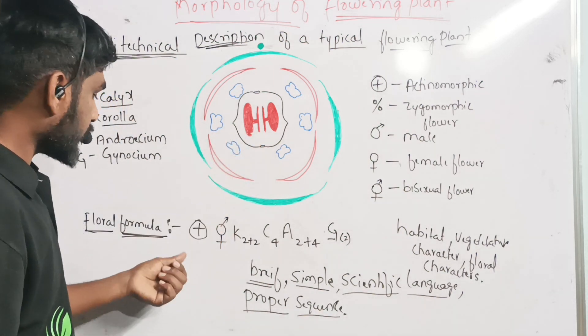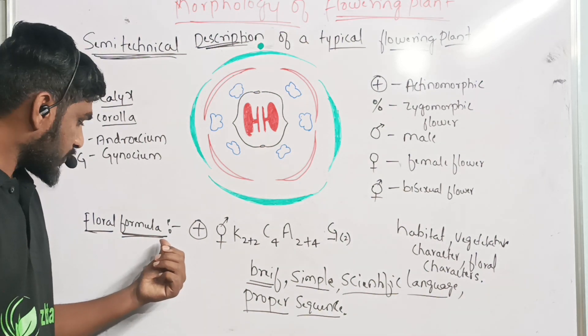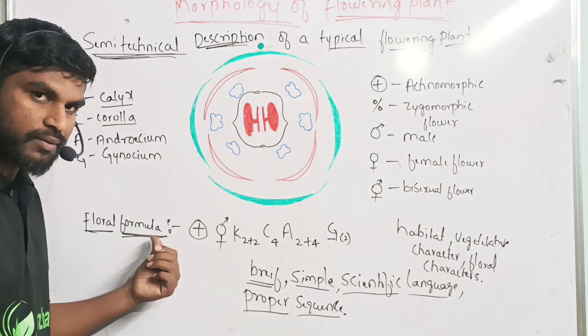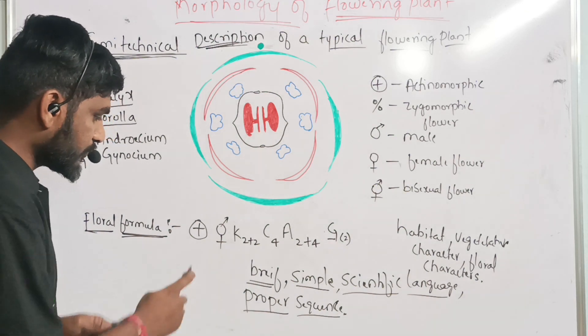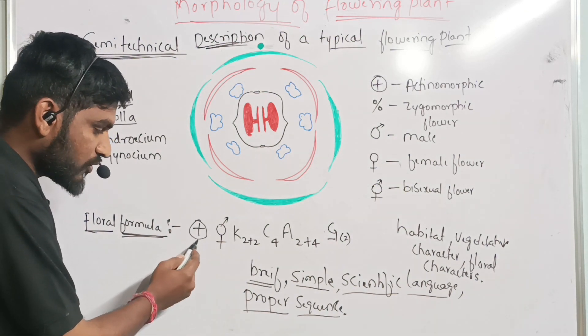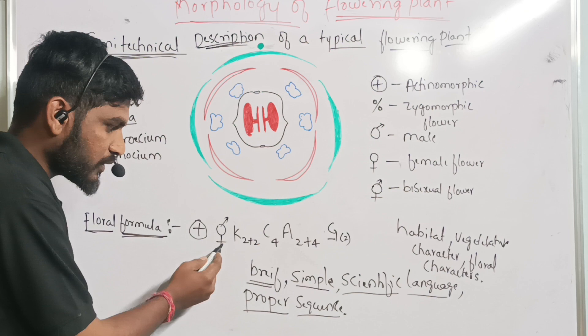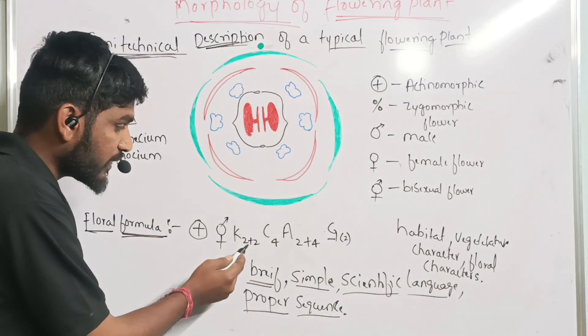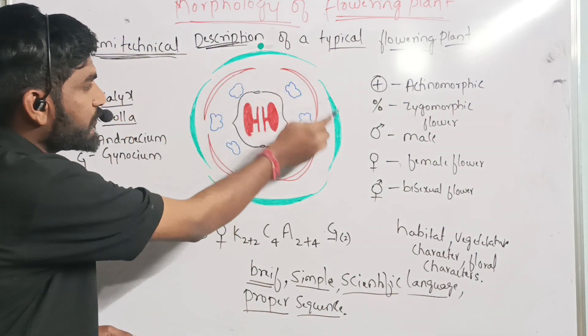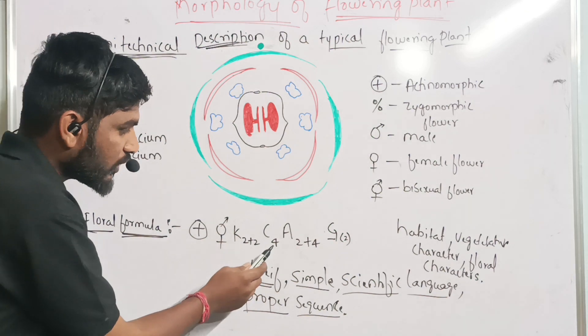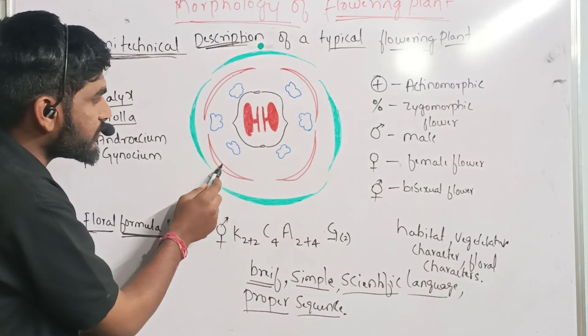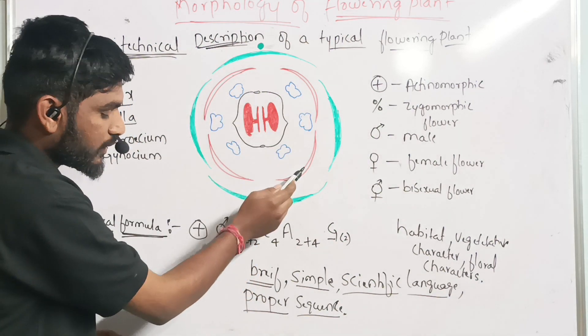Here, this is the floral formula of a plant. This one is actinomorphic, bisexual. Calyx, four are present - one, two, three, four. Corolla, four are present - one, two, three, four.